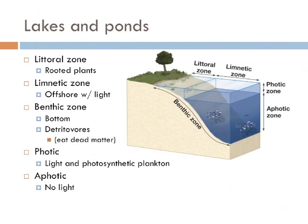Free-floating photosynthetic organisms can be found in the limnetic zone or the littoral zone, and collectively these are known as the photic zone. The limnetic zone is the zone offshore that still has enough sunlight so that photosynthetic organisms can make enough sugar to survive. The benthic zone is the bottom of the lake or pond, and this is most likely where you would find detritivores — organisms that consume dead matter after it floats down.